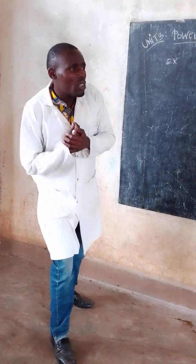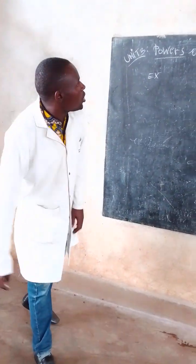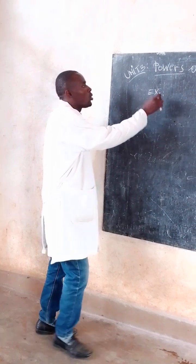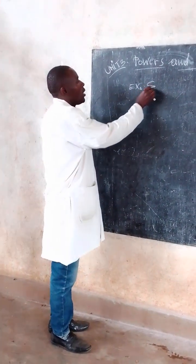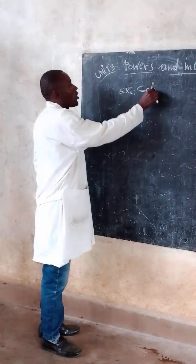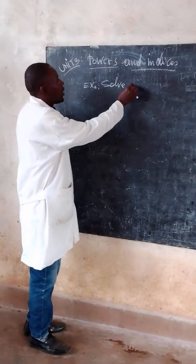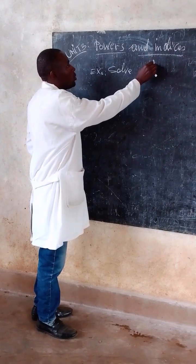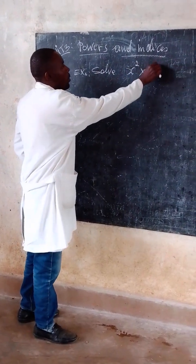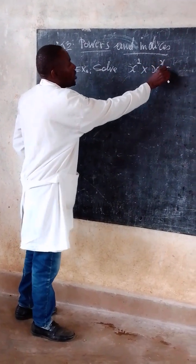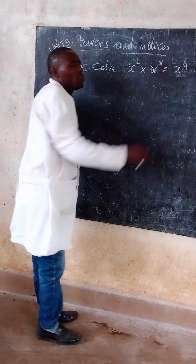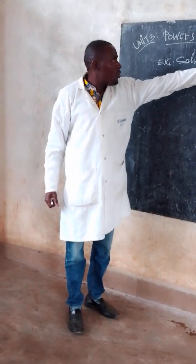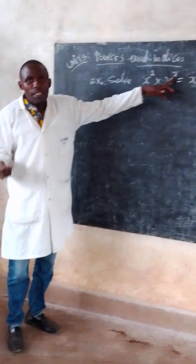Today I am going to discuss and demonstrate an example about powers. By solving x to the power 2 times x to the power x is equal to x to the power 4. Here we are going to find out the value of x.